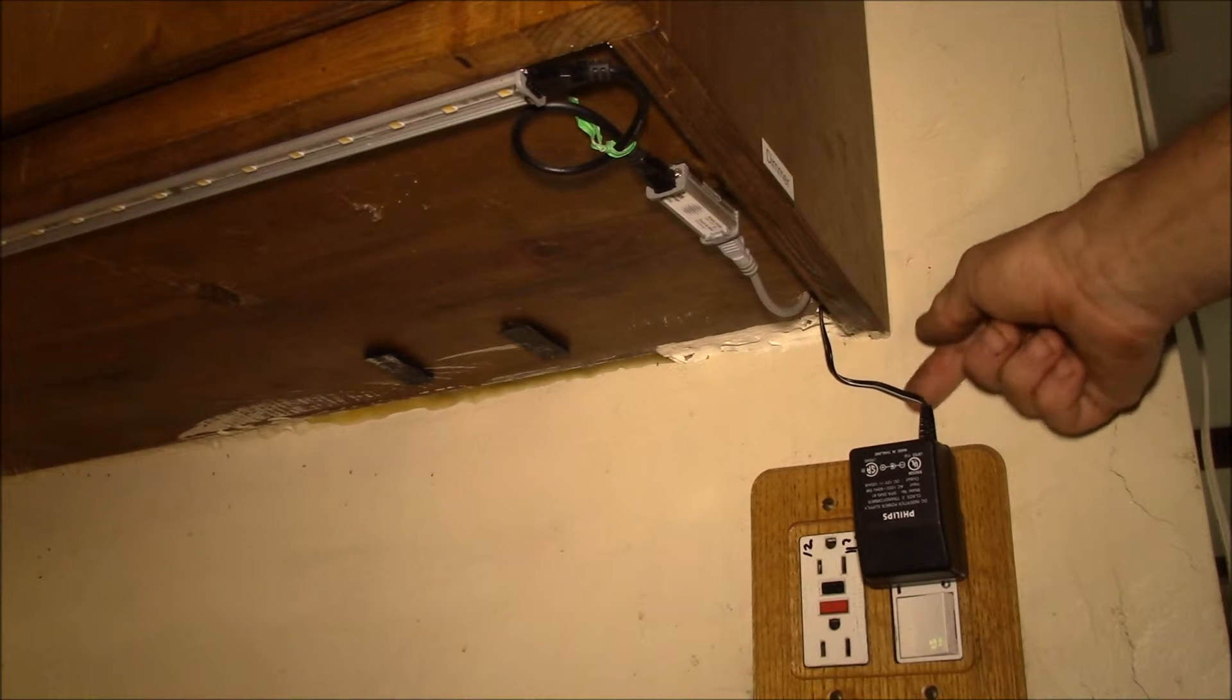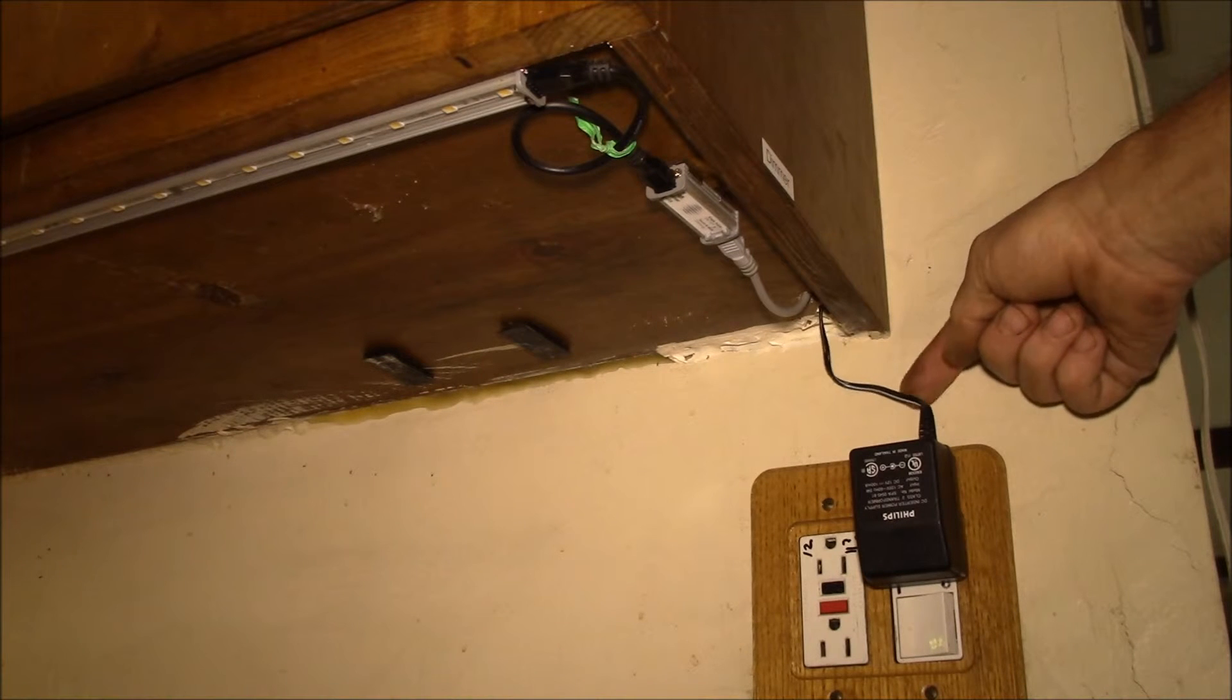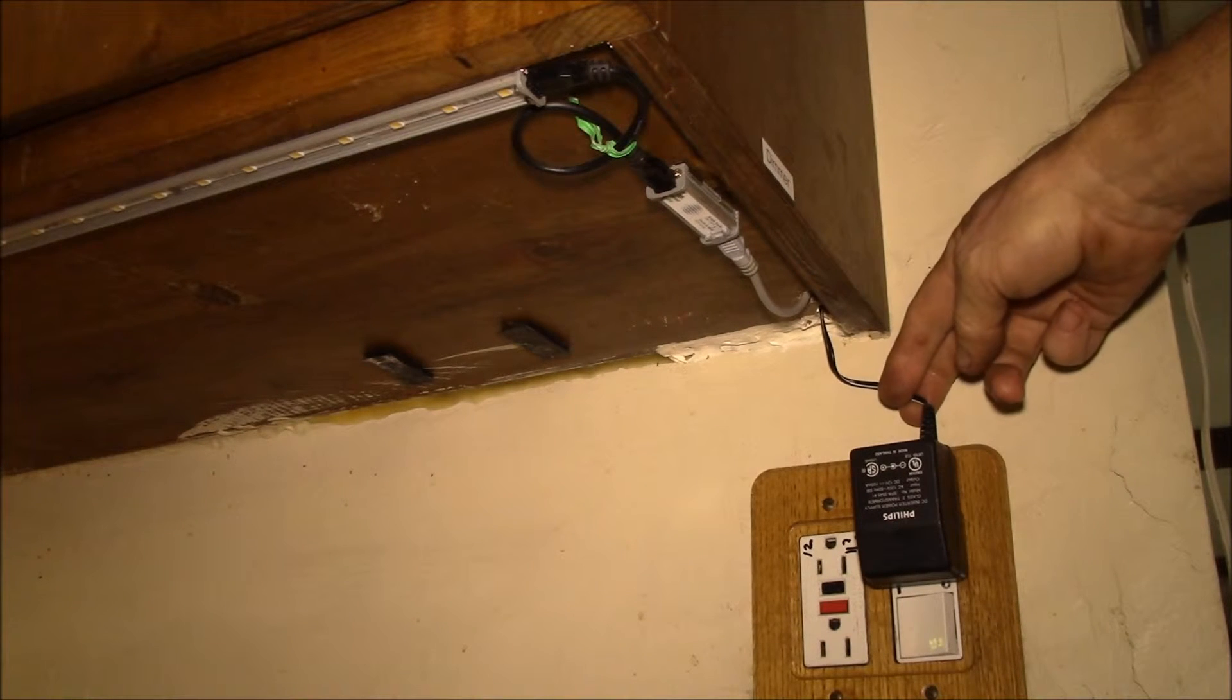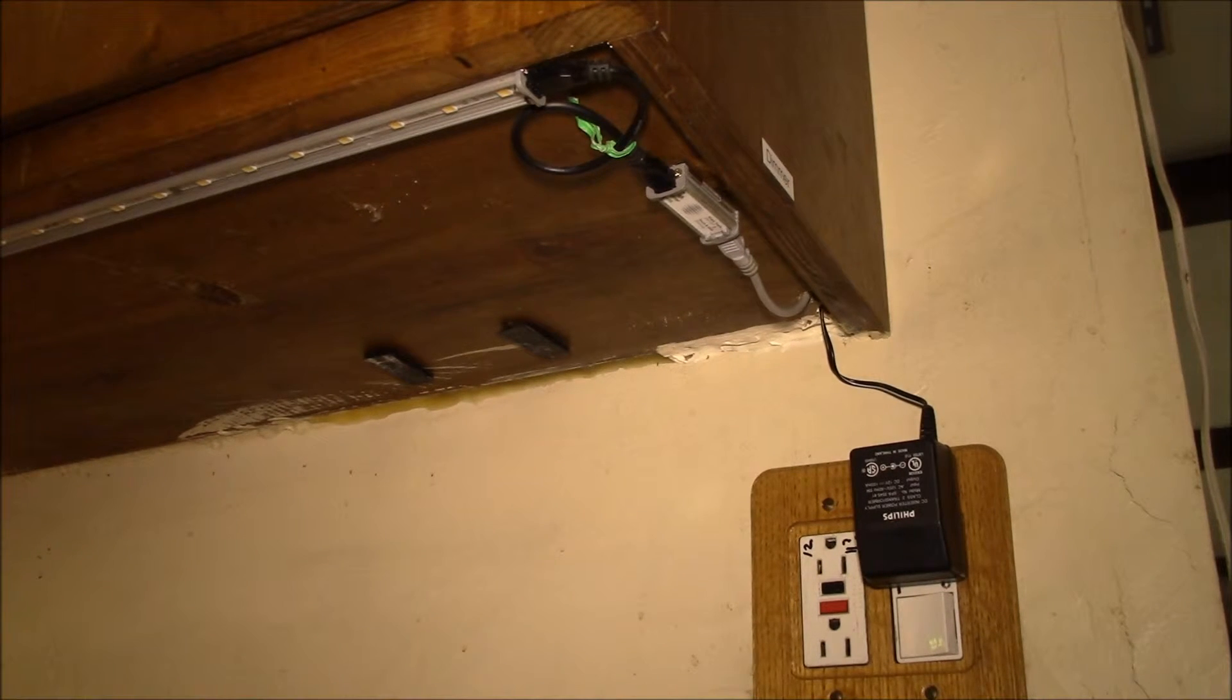This is called class 2 wiring. Your battery charger is class 2 wiring, your doorbell is class 2 wiring, your thermostat for your furnace is class 2 wiring. In-wall speakers, cable TV, telephone wires, satellite TV cables running in the walls - all of that is class 2 wiring.